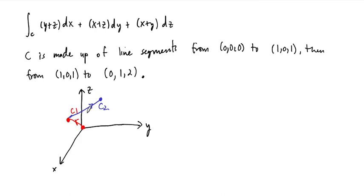So we have to represent this curve in two different parts, each part individually in terms of vector functions. That's because the parametrizations have to be smooth — we have to be able to take derivatives and compute the differentials dx, dy, dz.